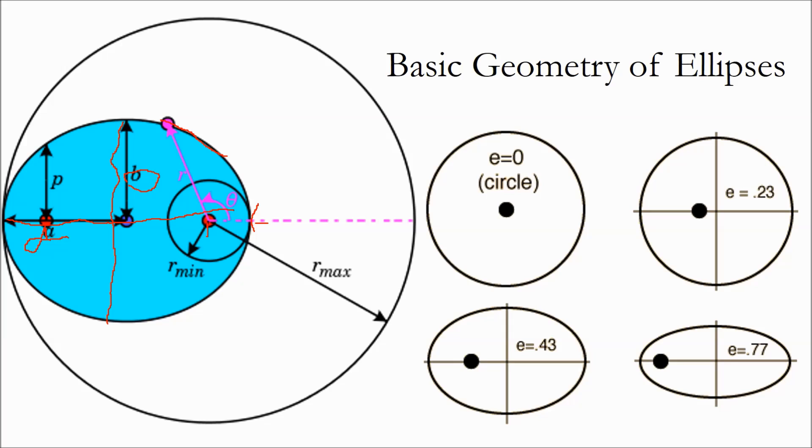First, we see a circle, which is the special case of an ellipse with zero eccentricity. As we increase the eccentricity, we can see that the ellipse stretches out, and the foci move further and further away from the geometric center.